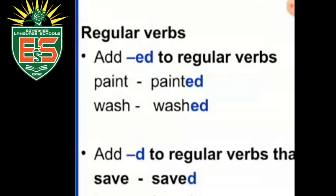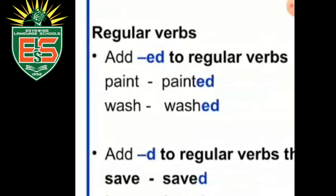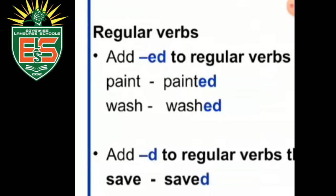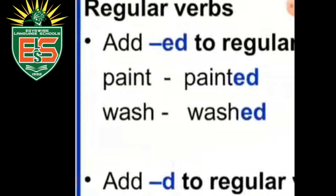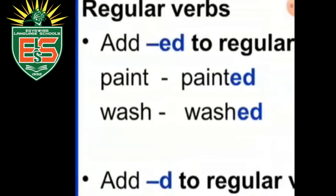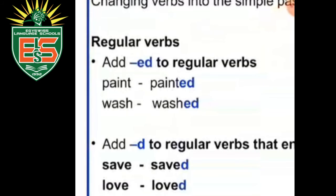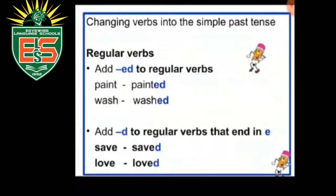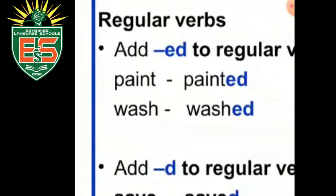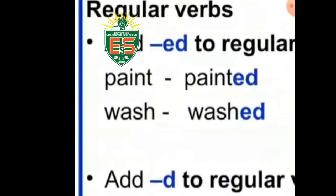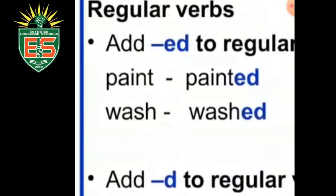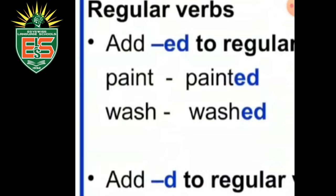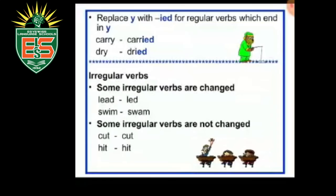To change verbs into the simple past tense for regular verbs: the first case, just add -ed. For example, 'paint' becomes 'painted'; 'wash' becomes 'washed'. The second case, add -d to regular verbs that end in -e. For example, 'save' ends in -e, so add -d: 'saved'. 'Love' ends in -e, so add -d: 'loved'.